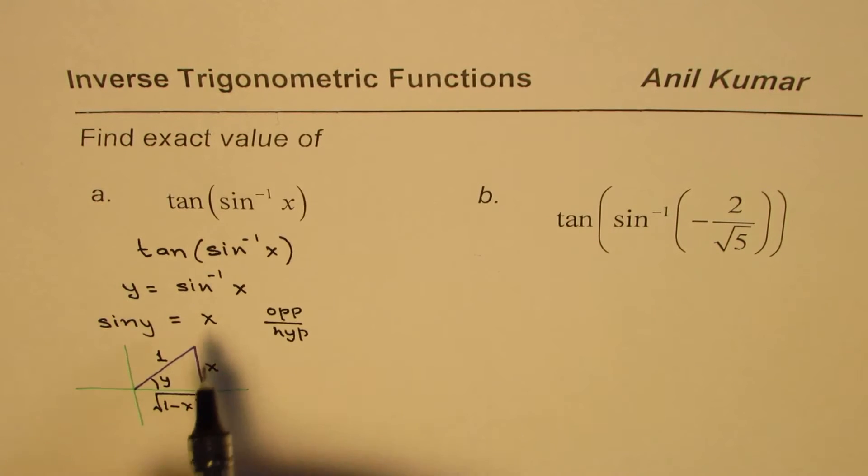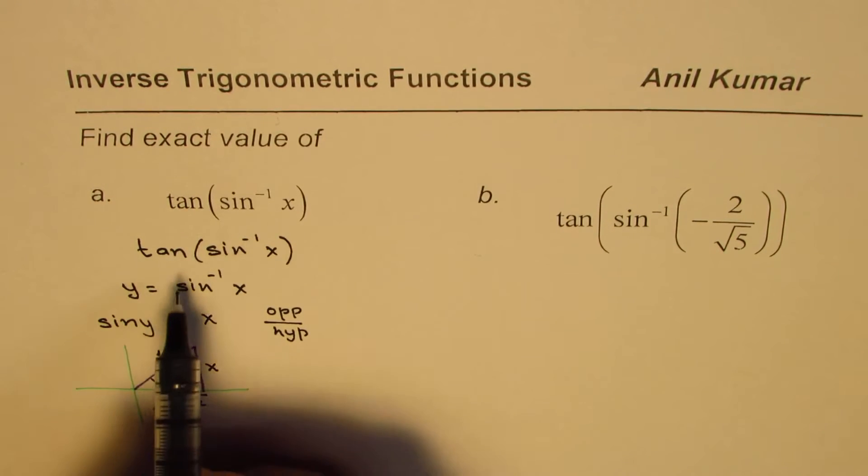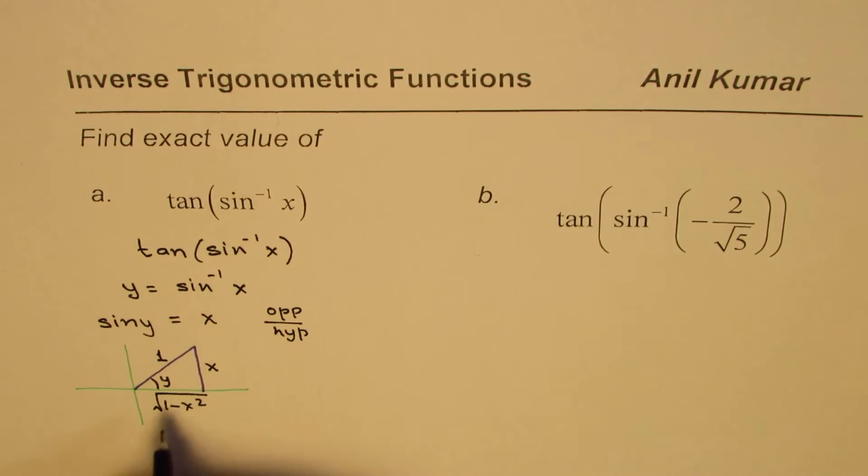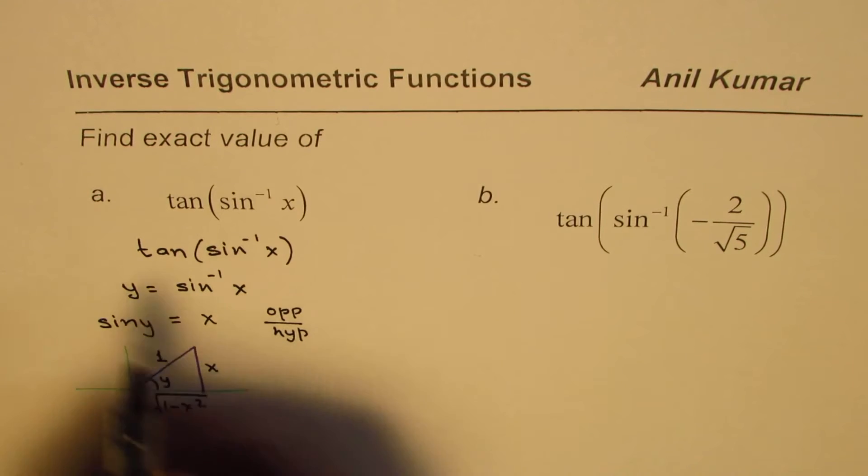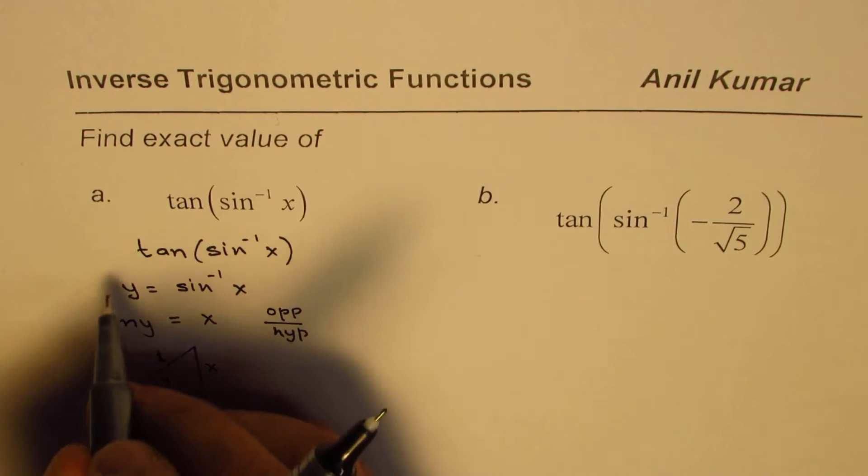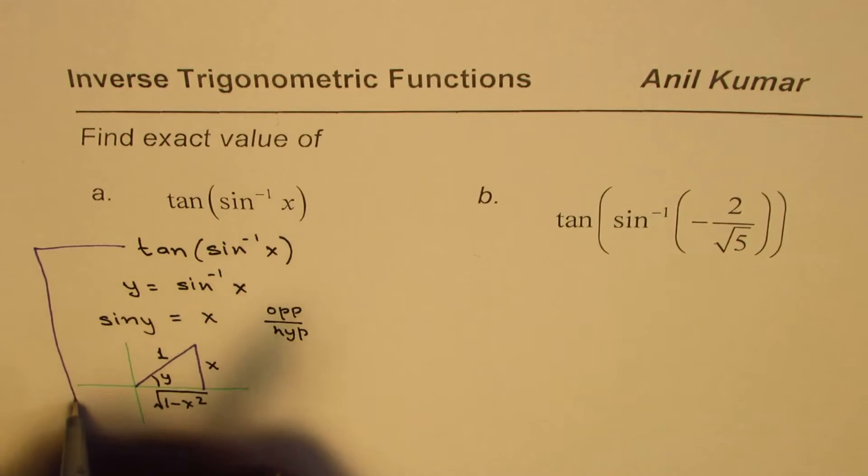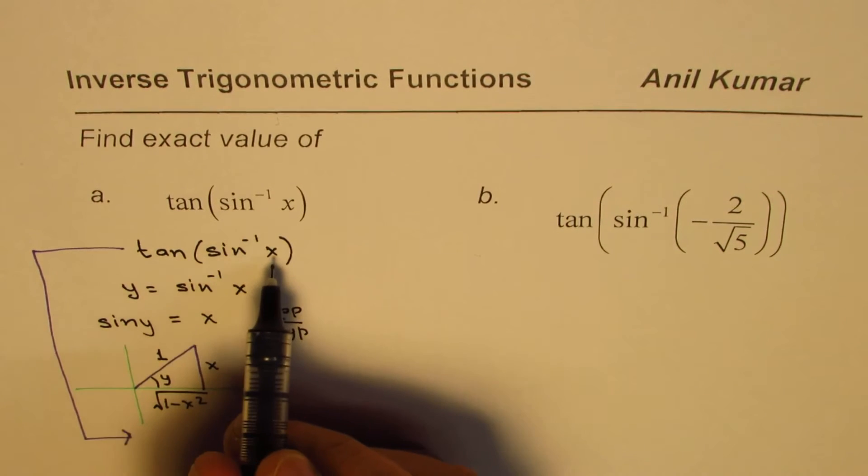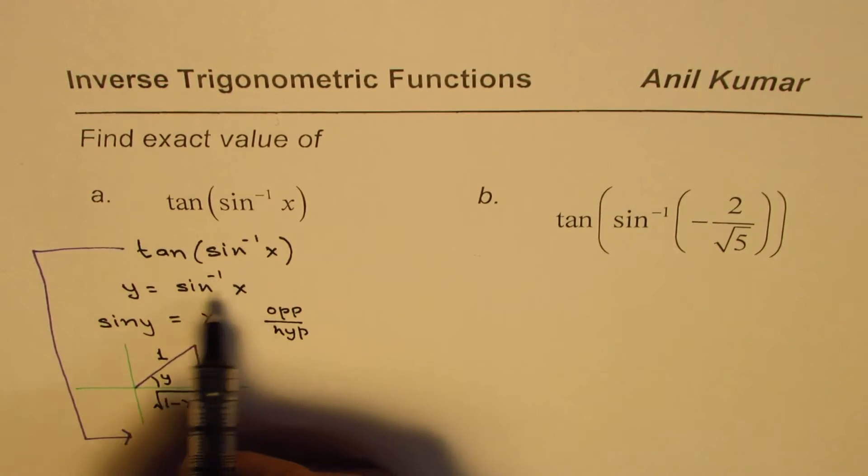From here it is clear that sine y could be written as... So we could write tan(sin⁻¹(x)) as equals to, let me link this. We'll go from here to this place. So tan(sin⁻¹(x)), since sine inverse of x is y, I could write this as equal to tan(y).